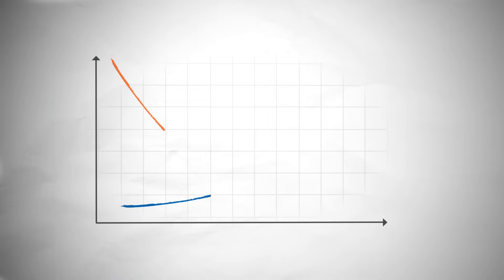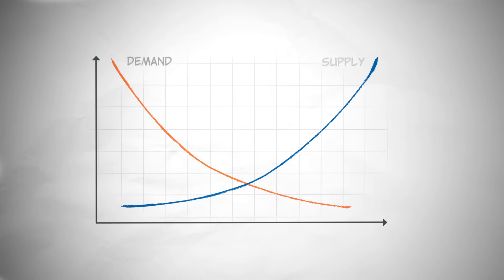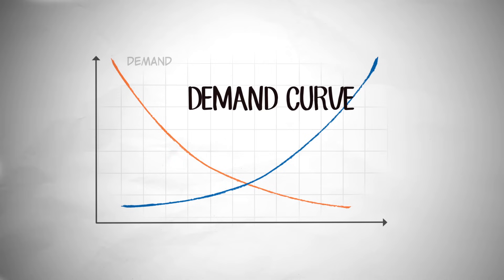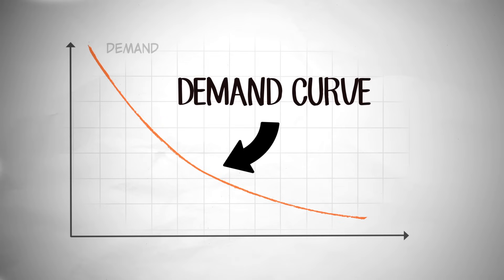Supply and demand are fundamental concepts in economics. Usually, they're represented by a graph like this. So what does this mean? Well, let's start with the demand curve.